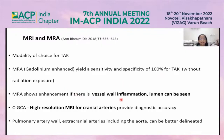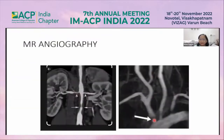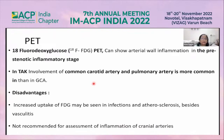MRI shows vessel wall enhancement when inflammation is present, and we can also visualize the lumen. For cranial giant cell arteritis, high-resolution MRI is used. MR angiography identifies stenosis; here, there is narrowing visible from the aortic arch.